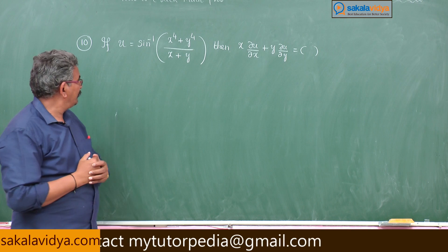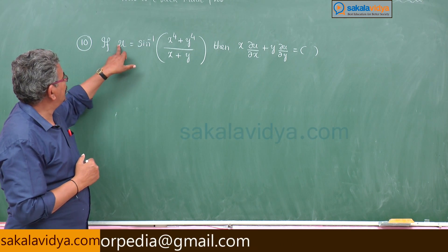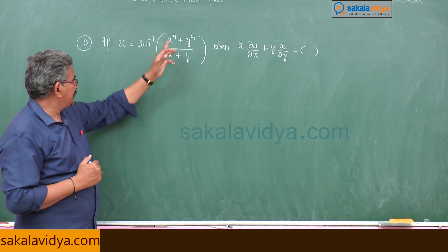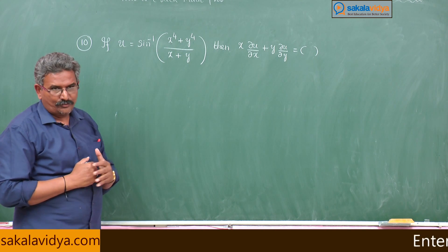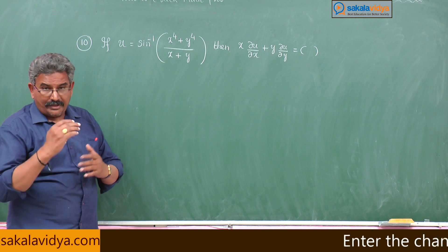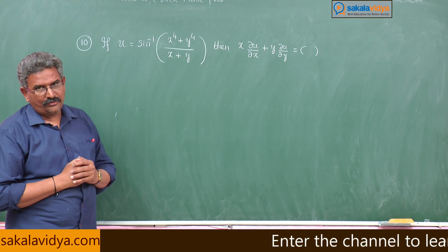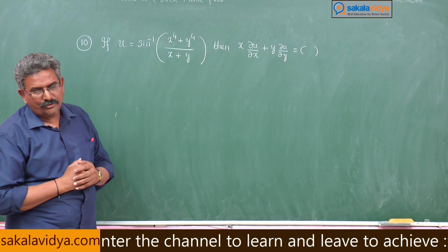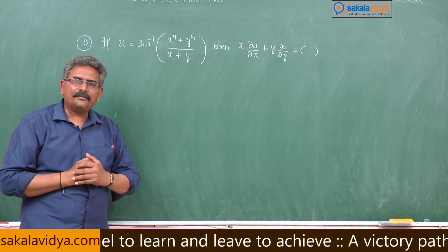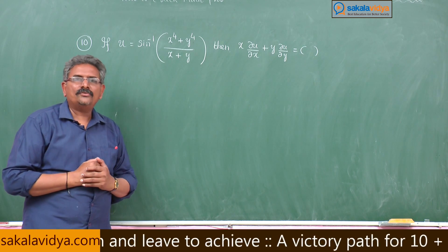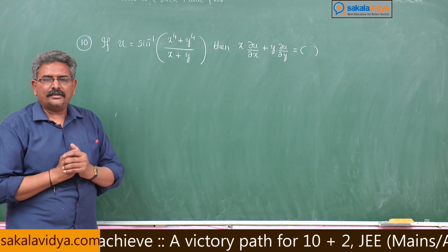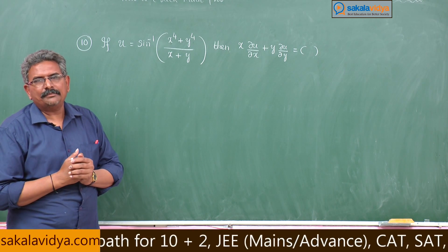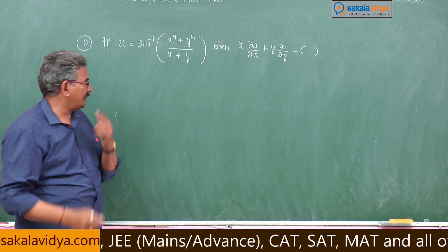Here we write sin u = (x^4 + y^4)/(x + y). This expression is a homogeneous function, and we need to find its degree. Using Euler's formula, x ∂u/∂x + y ∂u/∂y = n·f. That method is generally used but will be very lengthy, so we use a shortcut.